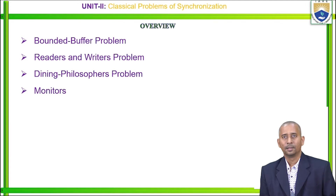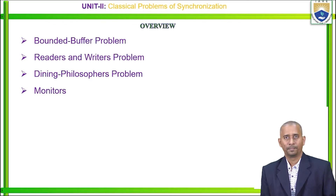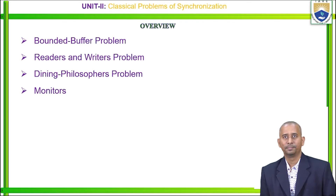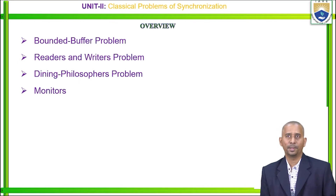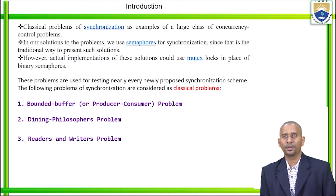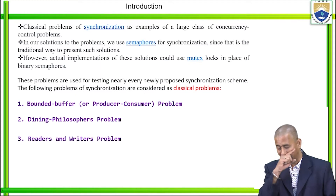There are various classical problems of synchronization: the bounded buffer problem, the readers and writers problem, the dining philosophers problem, and the concept of monitors. The bounded buffer problem is also called the producer-consumer problem. Let us look into the introduction part of these classical problems of synchronization.